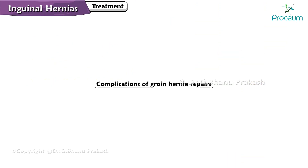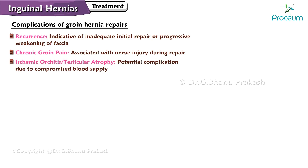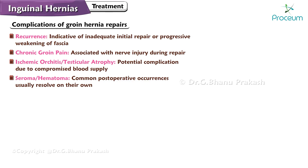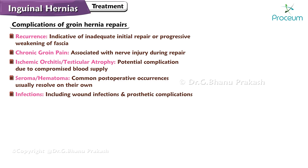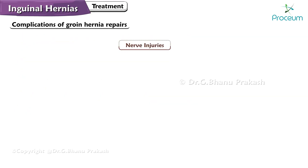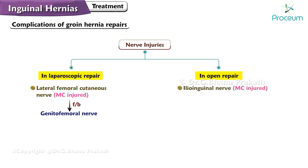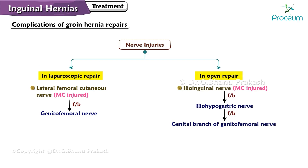Complications of groin hernia repairs include: recurrence, indicative of inadequate initial repair or progressive weakening of the fascia; chronic groin pain, often associated with nerve injury during repair; ischemic orchitis or testicular atrophy due to compromised blood supply; seroma or hematoma, common postoperative occurrences that usually resolve on their own; infections, including wound infections and prosthetic complications; bladder injury or osteitis pubis, specific to the surgical approach; and nerve injuries. In laparoscopic repair, the lateral femoral cutaneous nerve is most commonly injured, followed by the genitofemoral nerve. In open repair, the ilioinguinal nerve is most commonly injured, followed by the iliohypogastric nerve, and then the genital branch of the genitofemoral nerve.